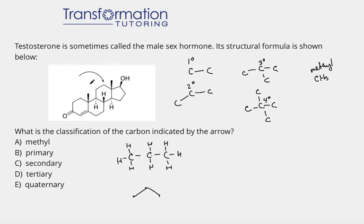Now let's go back to our molecule and see where the arrow is pointing. How many carbons is this carbon connected to? Is it primary, secondary, or tertiary? This carbon is directly connected to the carbon on the left and the carbon on the right — that's all. So it is connected to two carbons, and since it's connected to two carbons, it must be secondary. The carbon is missing two bonds, meaning it's connected to two hydrogens not shown, but because it connects to one carbon on the left and one on the right — two carbons only — it is a secondary carbon.